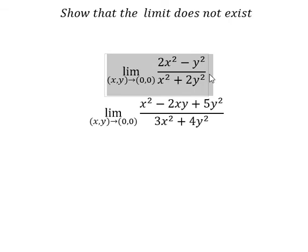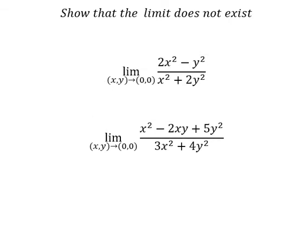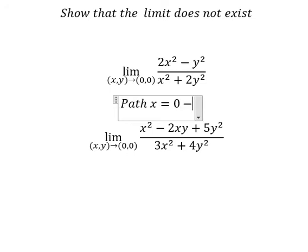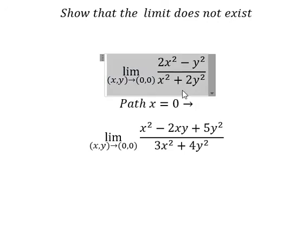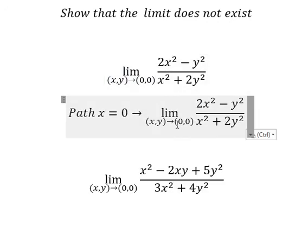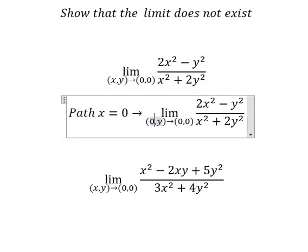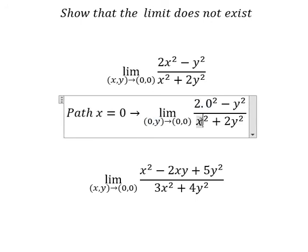For question number one, I will consider path number one, which is x equals to zero. We put zero for x here and here. We have negative y² divided by x² plus 2y², which simplifies to negative one over two.